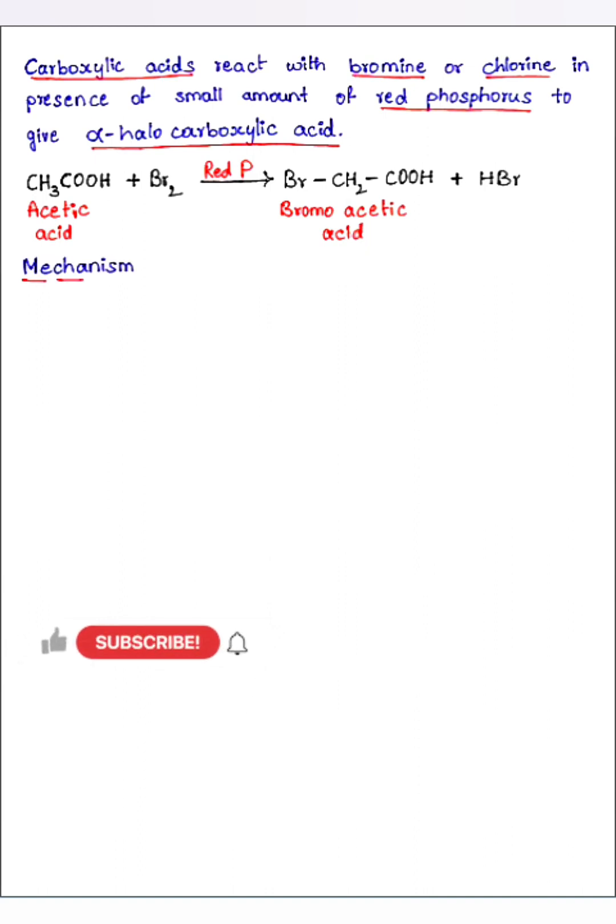Now let us see the mechanism of this reaction. In this reaction red phosphorus is acting as a catalyst. CH3COOH I am taking first and here I am adding Br2.